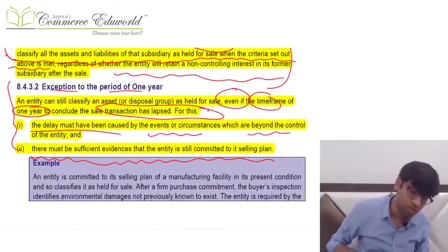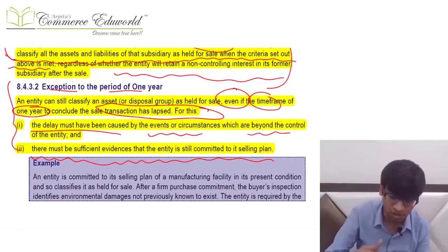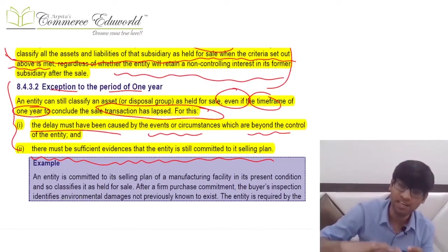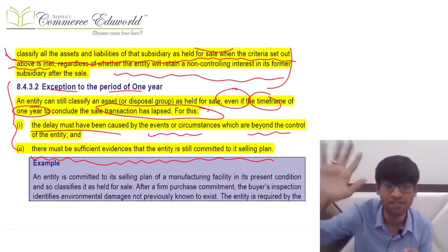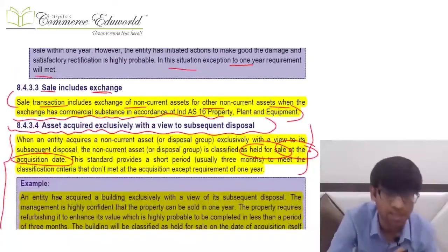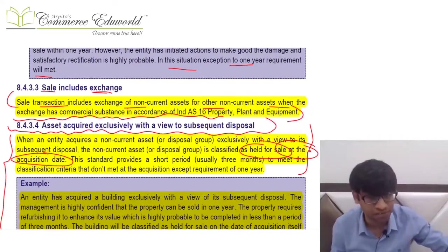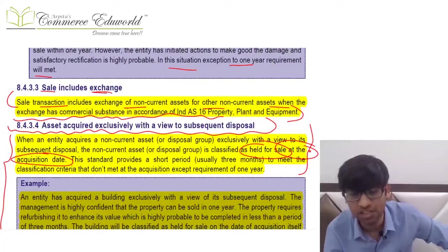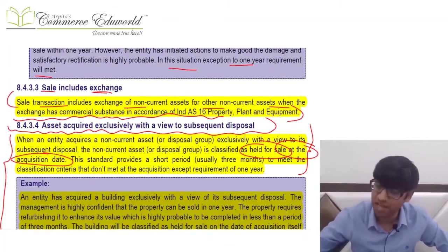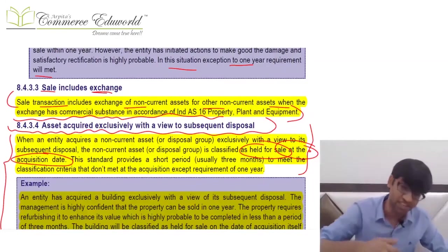There is one exception to the one-year clause. The expectation that sale should be completed within one year can change. If there is a delay due to events and circumstances beyond our control — like a pandemic — but the entity is still committed to the plan to sell, it can continue to be accounted for as held for sale even if one year has lapsed, provided evidence of commitment is available. Held for sale also includes held for exchange, where that exchange has commercial substance — for example, exchanging a private jet for a building where cash flows are substantially different.